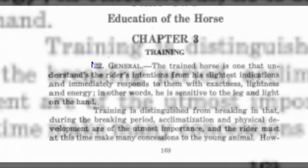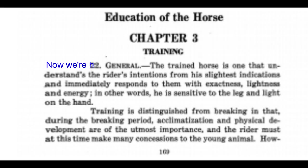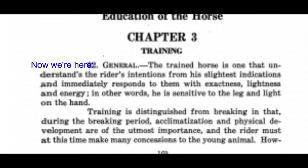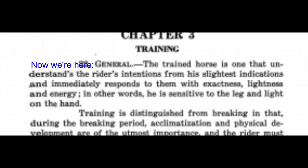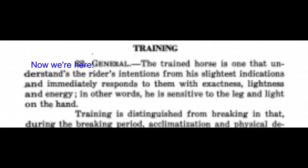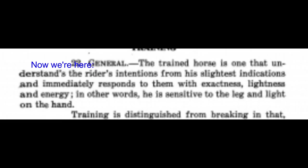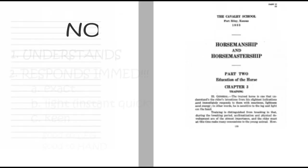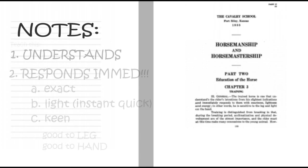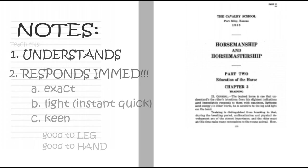Now, what is a trained horse? What are we told by our U.S. instructions is a trained horse? This is what it says: 'The trained horse is one that understands the rider's intention from the slightest indications and immediately responds to them with exactness, lightness, and energy.' In other words, he is sensitive to the leg and light to the hand. So those are our marching orders.